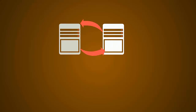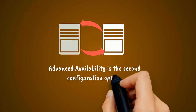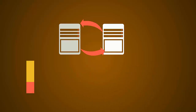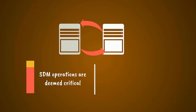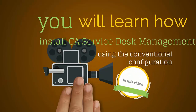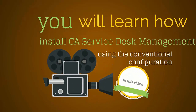Advanced Availability is the second configuration option. This configuration supports environments where SDM operations are deemed critical and continual availability of SDM operations is a requirement. In this video, you will learn how to install CA Service Desk Management using the conventional configuration.